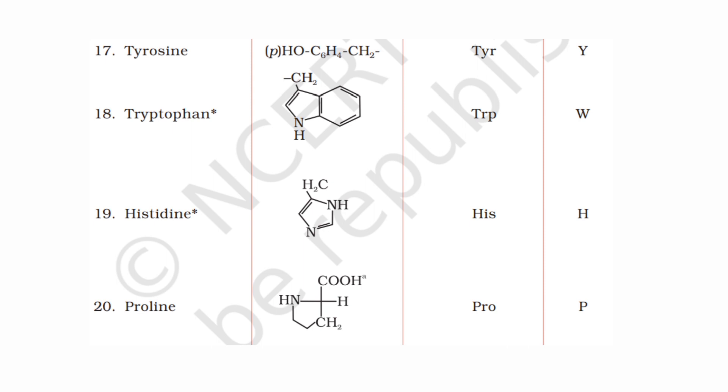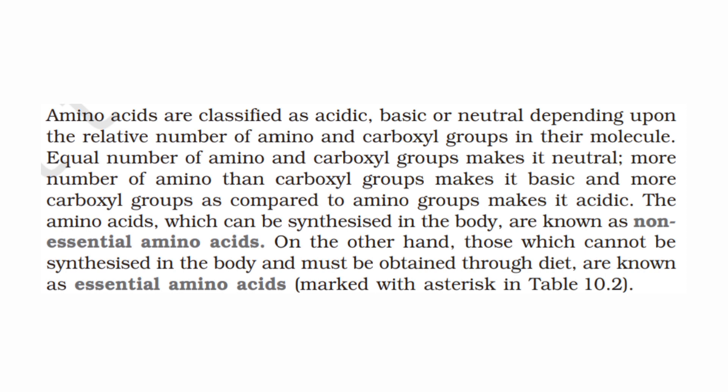The structures of individual amino acids are not very important for the exam, but the amino group and acid group are essential to know. Amino acids can be basic, neutral, or acidic. There are three types of amino acids, and they are further classified as essential amino acids and non-essential amino acids. There are 10 essential amino acids.